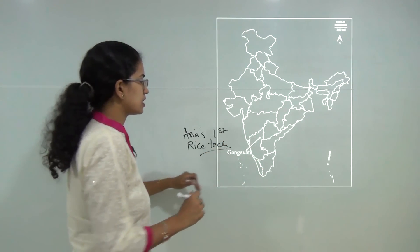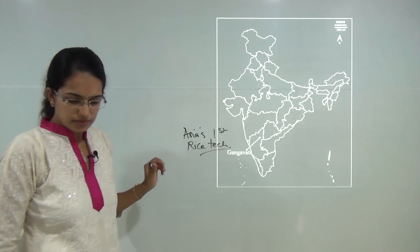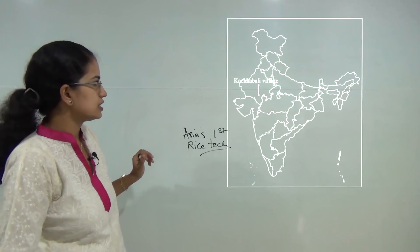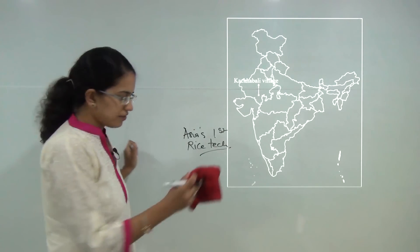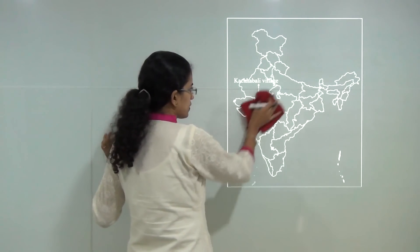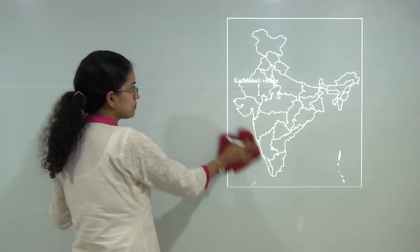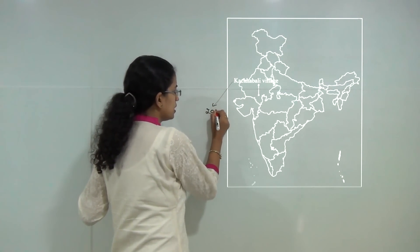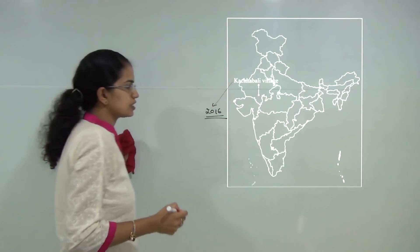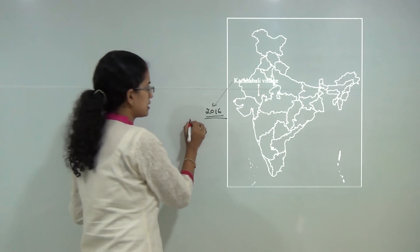Next location is Kachabali village. Kachabali village is located in Bhim Tehsil of Rajasthan. It is known for its liquor-free drive. In 2016 it became the first village in Rajasthan to be declared as liquor free.